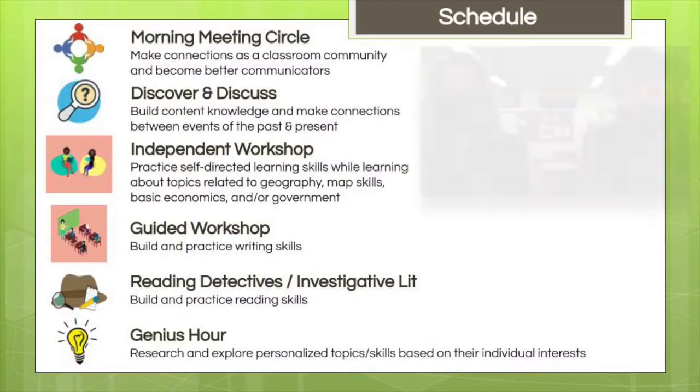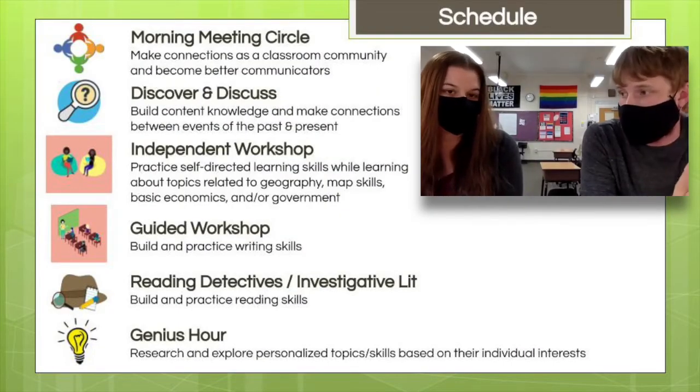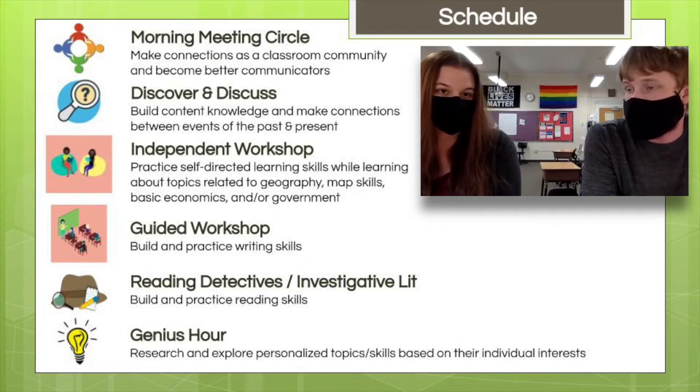Our school is so small we average about 10 to 15 kids in a grade. In order for Kyle and I to co-teach, we had to combine two classes — so we have one section which is a fifth and sixth grade combined humanities class, and another section which is a seventh and eighth grade combined humanities class.